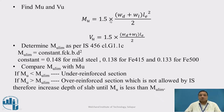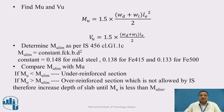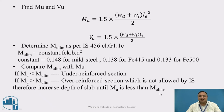Find MU and VU: MU equals 1.5 times (WD plus WL) times LE squared divided by 8, and VU equals 1.5 times (WD plus WL) times LE divided by 2. Determine MU limit as per IS456 clause G1.1C: MU limit equals a constant times FCK times B times D squared, where the constant is 0.148 for mild steel, 0.138 for Fe415, and 0.133 for Fe500. If MU is less than MU limit, it is an under-reinforced section; if MU is greater than MU limit it is over-reinforced, which is not allowed by IS456-2000 — in that case, increase the depth of the slab until MU is less than MU limit.